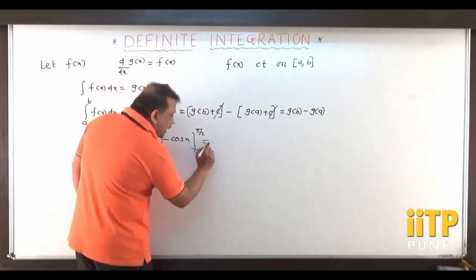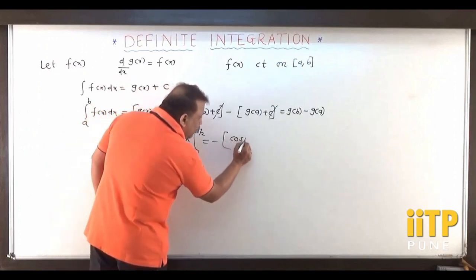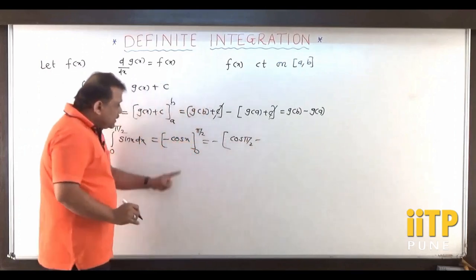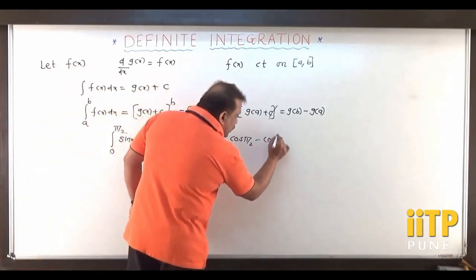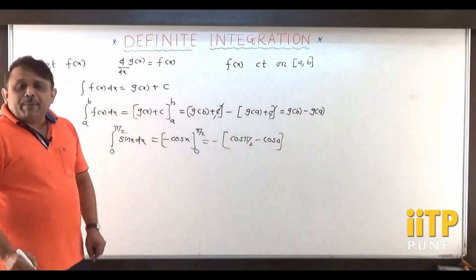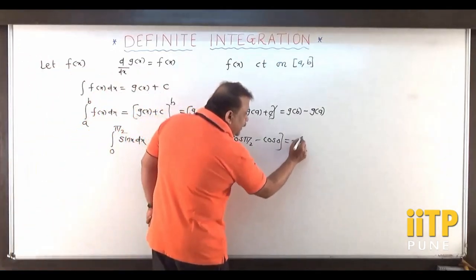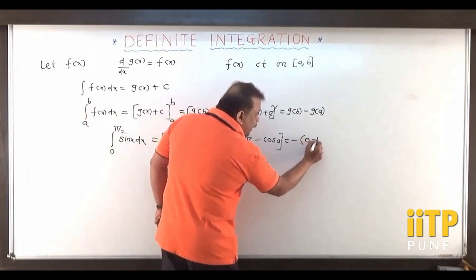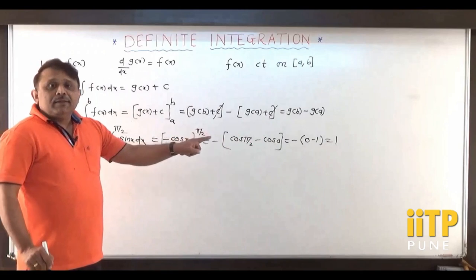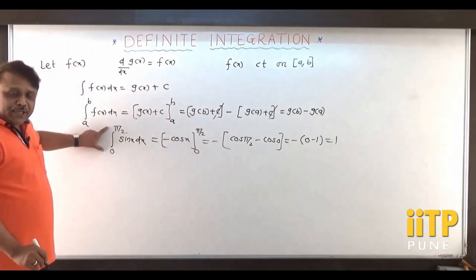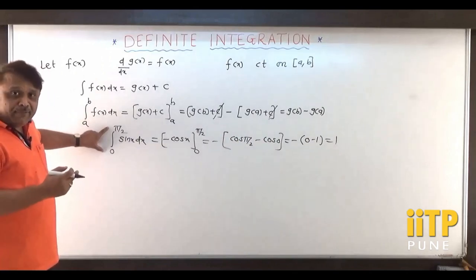Pulling the minus sign out, the final answer is always upper limit minus lower limit. Replacing x by π/2 gives cos(π/2), and replacing x by 0 gives cos(0). Now cos(π/2) is 0 and cos(0) is 1. So we get minus times (0 minus 1), which equals plus 1. So 1 is the value of this integration — a fixed number — making this a definite integral value.